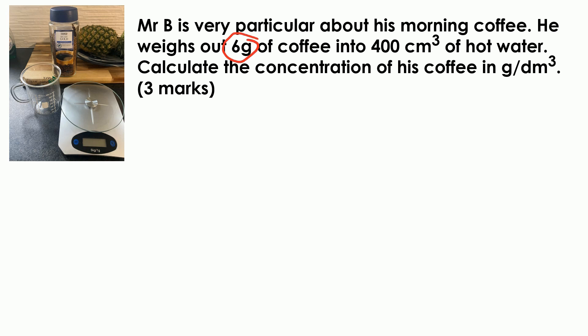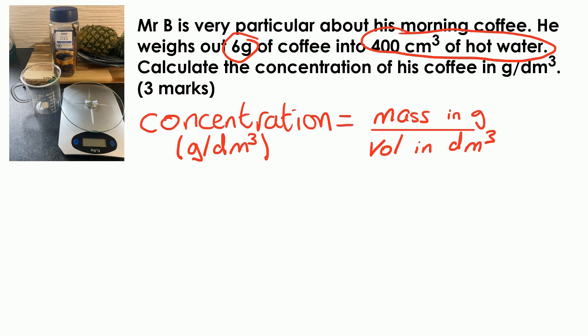We've got 6 grams of coffee — that's the solute, the solid of the solution. And we've got 400 cm³ of water — that's the solvent, the liquid part of the solution. The equation you need to remember, which you won't be given in your exam, is: concentration is mass in grams divided by the volume in dm³.